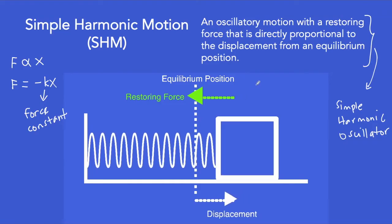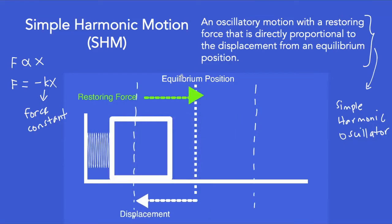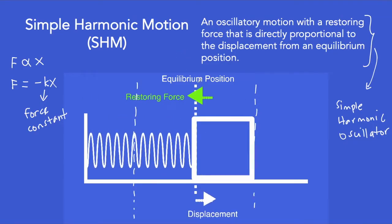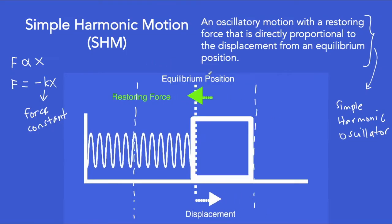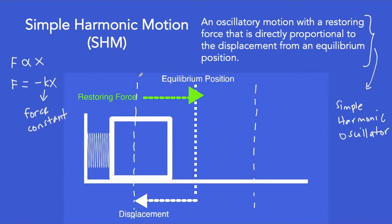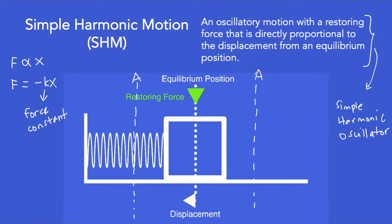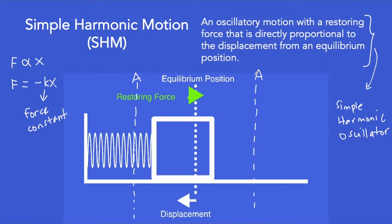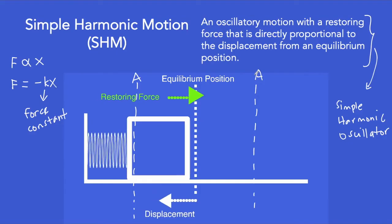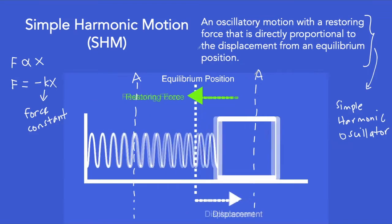Here, the maximum displacement of the object from the equilibrium position is called the amplitude, which we often symbolize as A. A familiar object that naturally possesses a restoring force when you displace it from equilibrium position is called a spring.